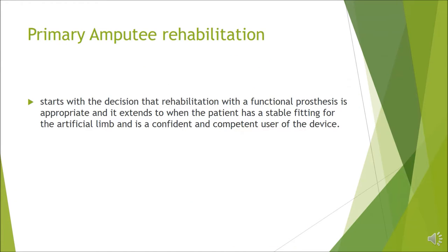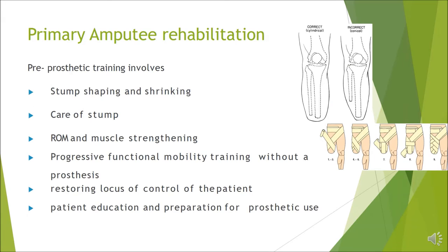Primary amputee rehabilitation is a journey of regaining desired functional improvement with prosthesis. This phase commences with the decision to rehabilitate with a prosthesis and extends until the patient is stable for fitting for an artificial limb, with proper confidence and competence in using the device. The initial part of primary amputee rehabilitation is pre-prosthetic training, which involves proper shaping and care of the stump. Ideally, the stump should be cylindrical in shape with adequate bone length, alongside muscle strengthening, range of motion exercises and functional mobility exercises.